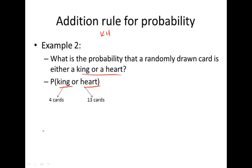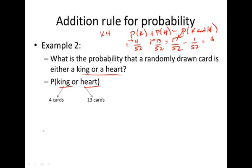We don't want to just say it's the probability of a king plus the probability of a heart, which would be 4 out of 52 and 13 out of 52. There's something missing here. That 17 indicates that there are 17 outcomes that are either kings or hearts. What's the missing piece?